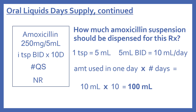Our first oral liquid prescription is amoxicillin 250 mg per 5 ml suspension, directions one teaspoon BID times 10 days — one teaspoonful twice a day for 10 days — dispense quantity sufficient, no refills. One teaspoon equals five milliliters, so that's 5 ml twice a day, giving 10 milliliters per day. We take 10 milliliters times 10 days, giving a total of 100 milliliters to dispense.